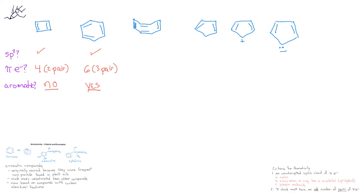We could also draw an 8-membered ring with alternating single and double bonds. This one would not be aromatic because it has 8 pi electrons, or 4 pairs of pi electrons. And since 4 is an even number, this molecule would not be aromatic.